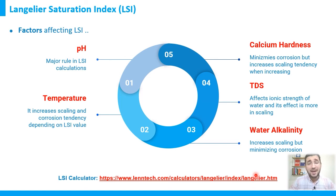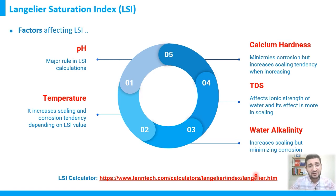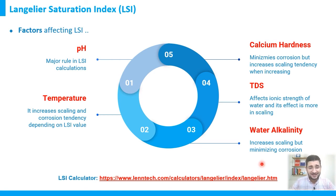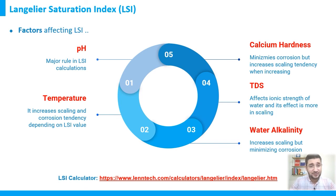There are many online LSI calculators available; you can prepare your own spreadsheet, find one online, or purchase one. Simply open a website, enter those five parameters, and you will get your LSI. You can try this on cooling water, desalination water, or even home water. I've provided a link to a website from the Lintec company where you can see how LSI calculations are done online. Remember, LSI is a unitless value — just a positive or negative number.